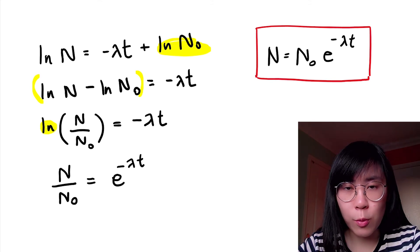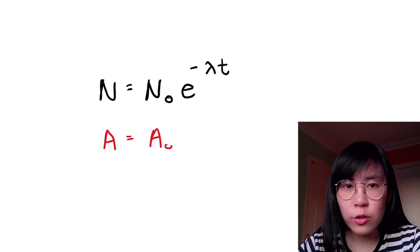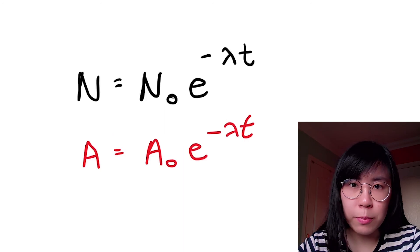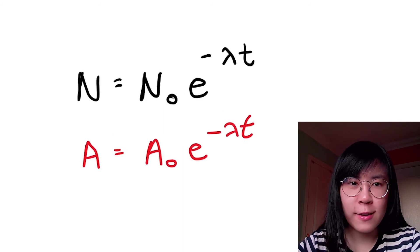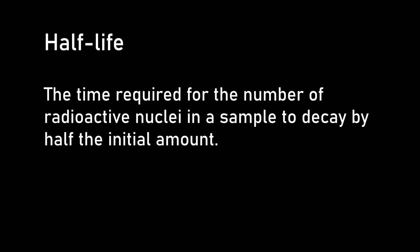And since activity is proportional to N, we can also write this expression replacing N with A. Now I'm going to take you one step further to derive an equation for half-life using our exponential equation. Half-life is the time required for the number of radioactive nuclei in a sample to reduce by half the original amounts.